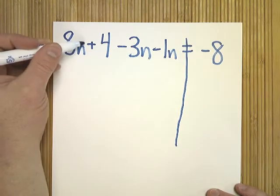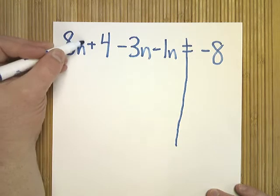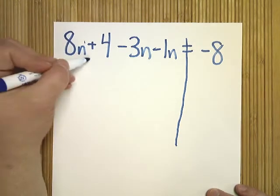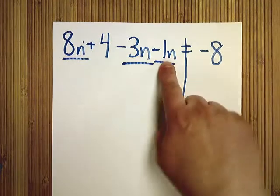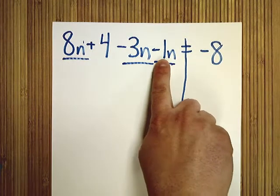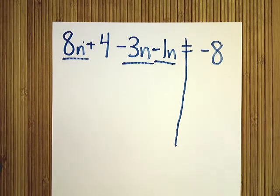So, what I'm going to do is mark things. Anything with n to the first power, which this would be first power if you didn't know that, make a line. I think in the original equation, I didn't show you that this is minus one n. I think it was just minus n.